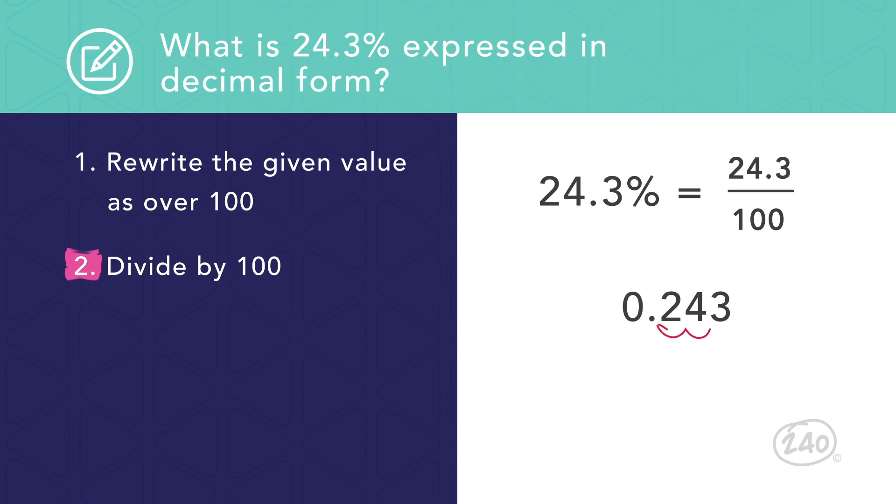To divide by 100, move the decimal two places to the left. This gives us 0.243. That shows us that 24.3% is equal to 0.243.